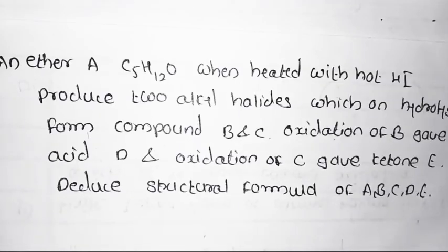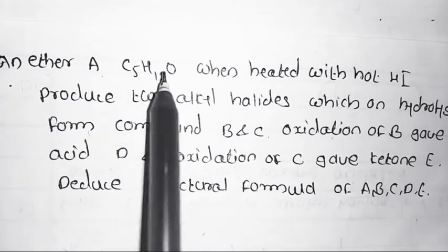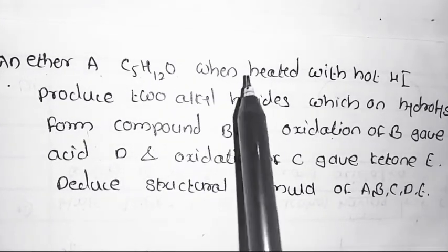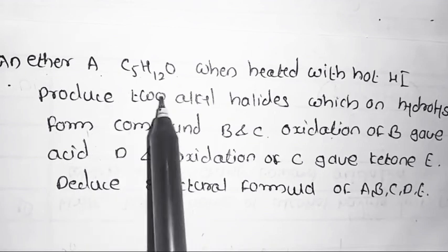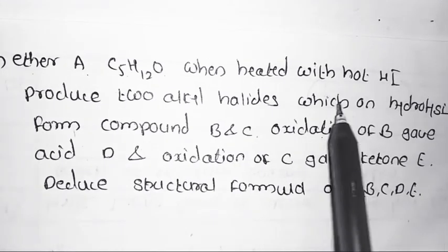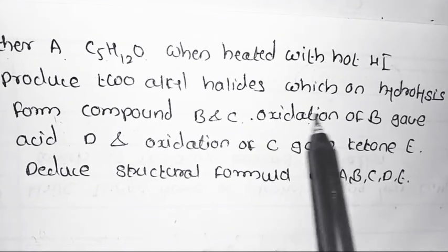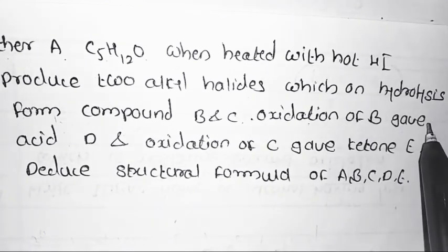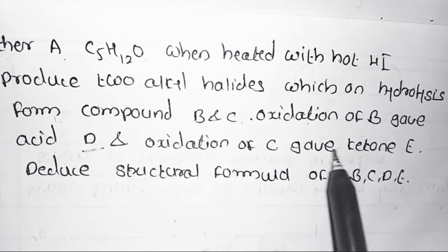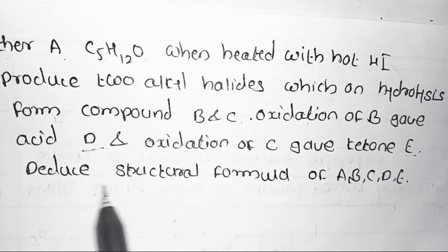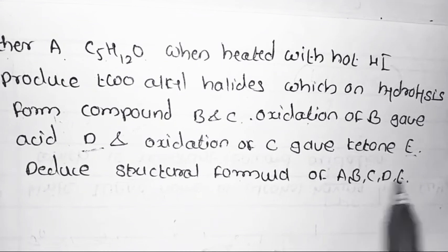Today's lecture we see question number 4. An ether A, C5H12O, on heated with hot HI to produce 2 alkyl halides which on hydrolysis form compounds B and C. Then oxidation of B gives acid D and oxidation of C gives ketone E. Find the structural formula of A, B, C, D and E.